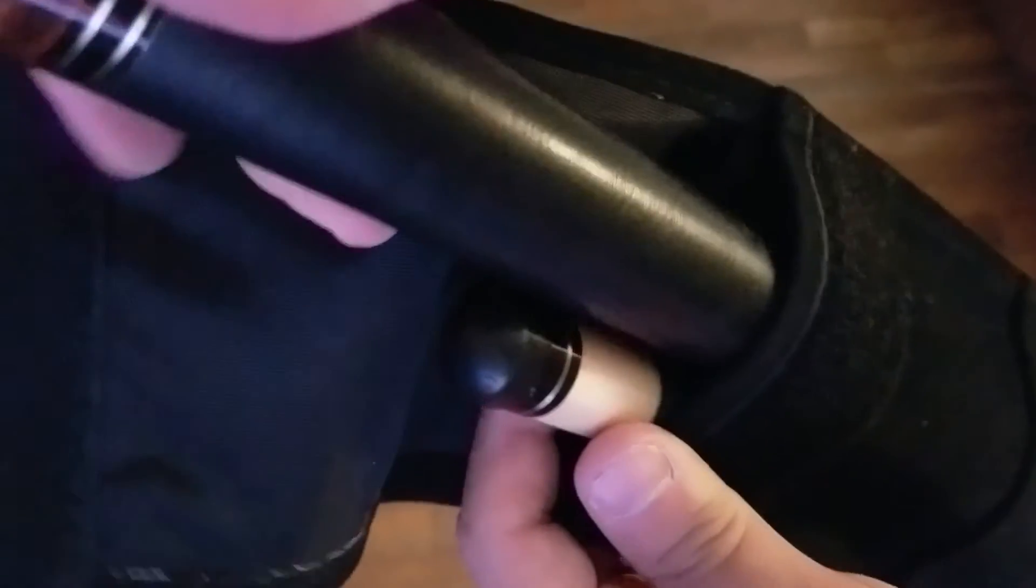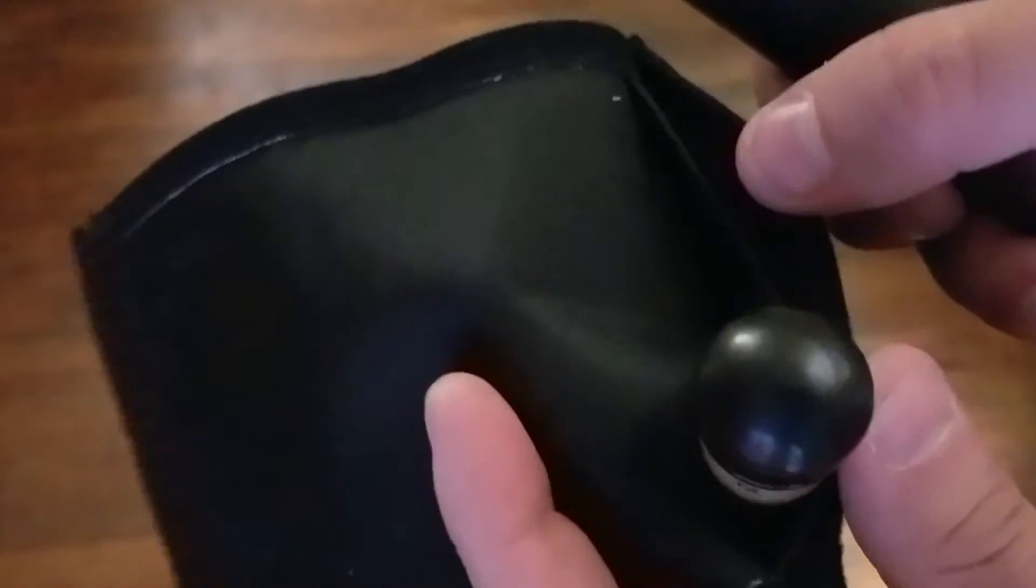One where you could put the shaft in, the other one where you could put the butt, so they're not rubbing up against each other. You can see there's two different slots, and then there's a little bag in the front where you could maybe hold your chalk.